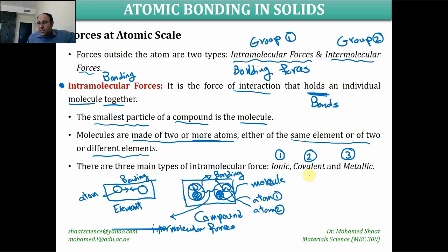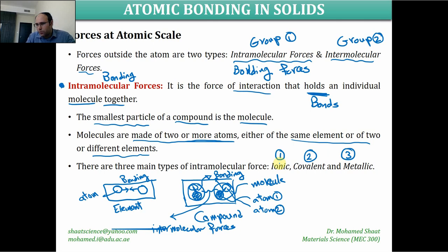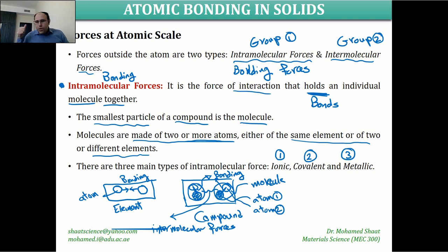The ionic force is the strongest of the three in many cases. The covalent is strong but in many cases weaker than the ionic bond. The metallic is the weakest bonding force. We will discuss how each type of bonding is generated and between which types of atoms.